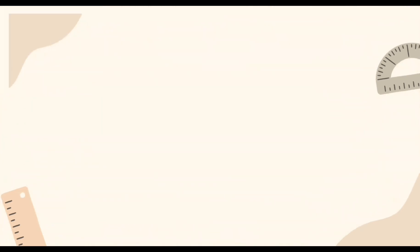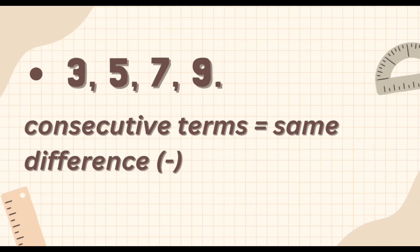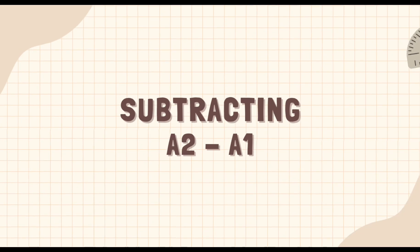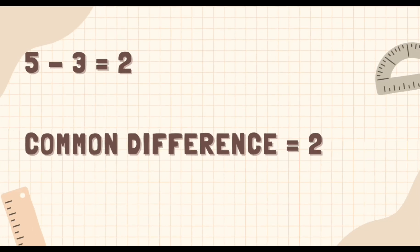Let me give an example: 3, 5, 7, at 9. Bibigyan ko kayo ng madaling paraan paano makuha ang common difference ng problem na ito. Remember, na ang consecutive terms ay pare-parehas ng different sets. Kailangan nyo isubtract ang a sub 2 at ang a sub 1. Gamitin natin ang problem. 5 minus 3 is equal to 2. Kaya naman ang common difference nila ay 2.